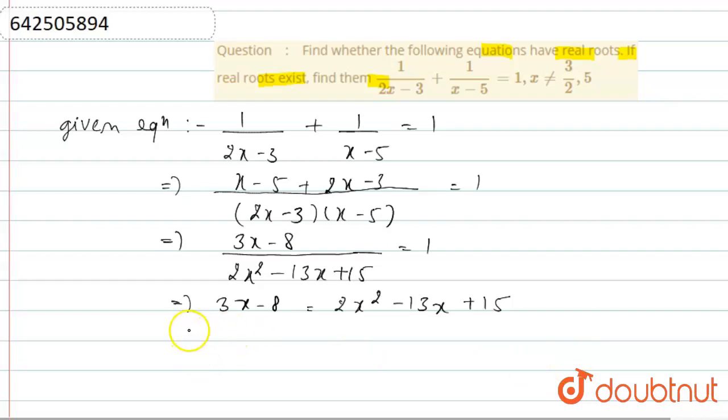If we simplify this, then we will get 2x square minus 16x plus 23 equal to 0.